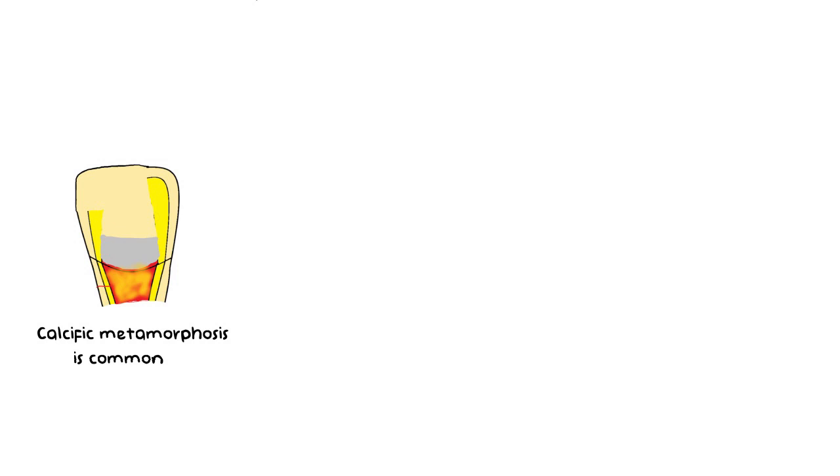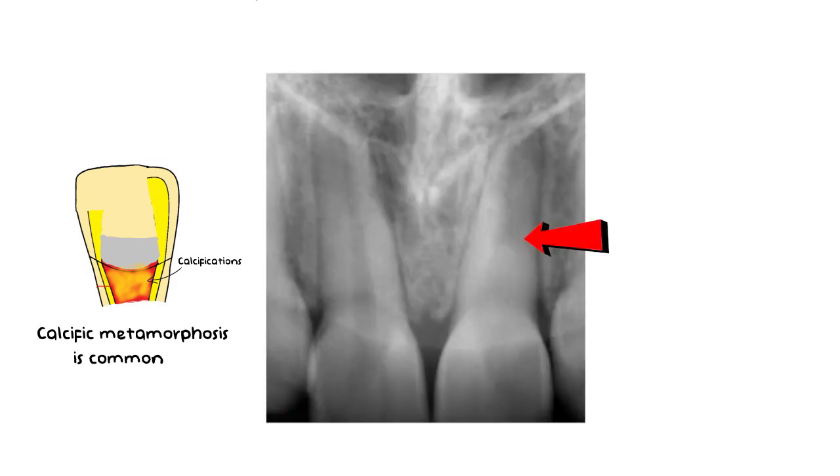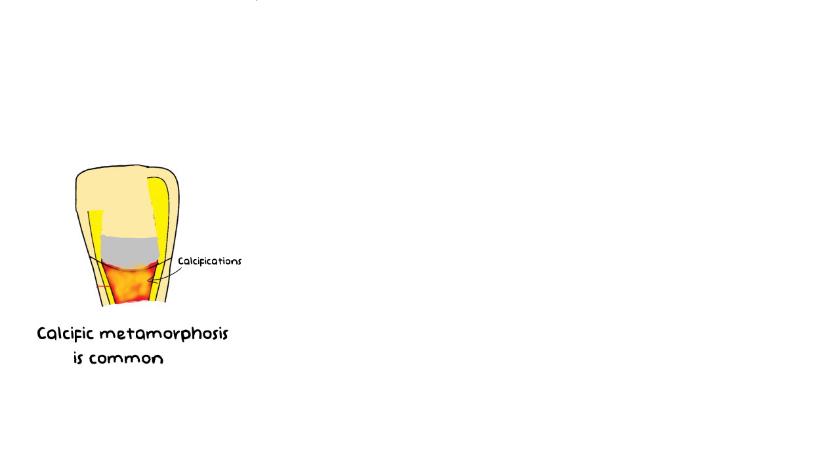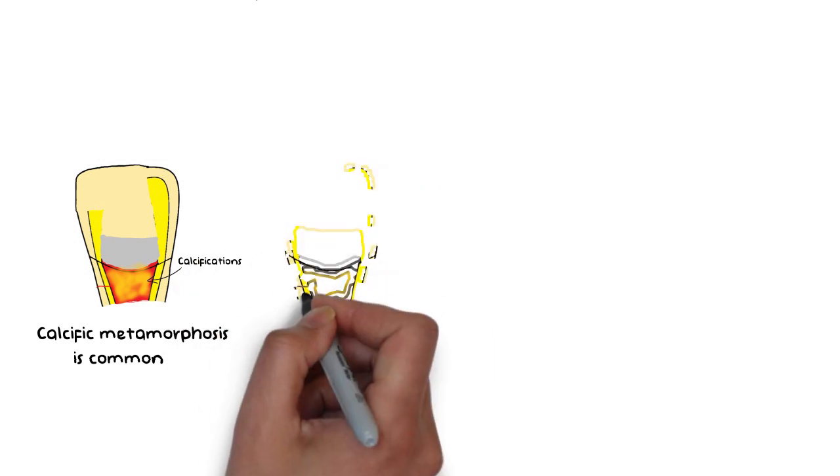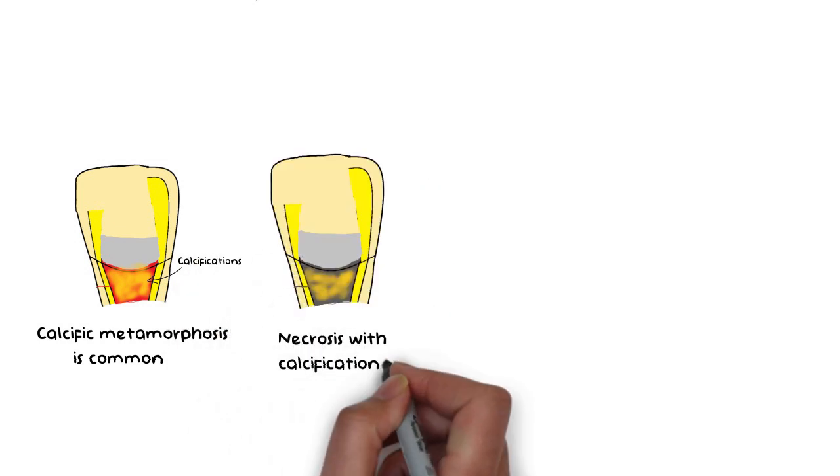Calcific metamorphosis is the filling of pulpal space with hard tissue formation. But according to most views, even after calcific metamorphosis is evident on the radiograph, root canal treatment is not recommended since calcific metamorphosis itself is not a pathological condition. I've talked more about calcific metamorphosis in detail in my pulp calcification video. But if the pulp becomes necrotic in the future and the canals are no longer negotiable for a root canal treatment because of the calcific metamorphosis, then surgery would be necessary.